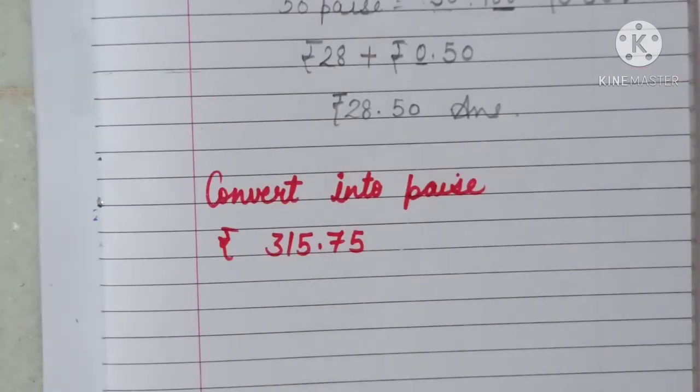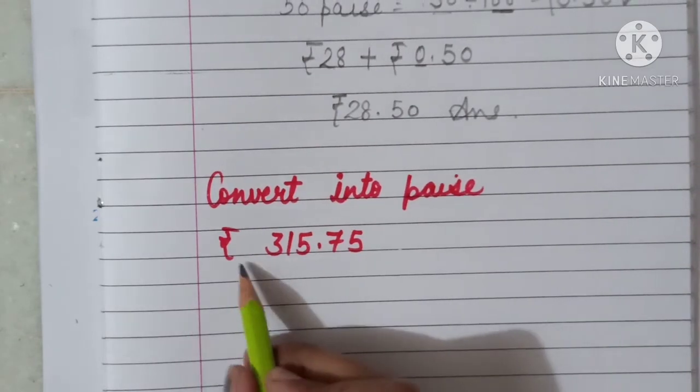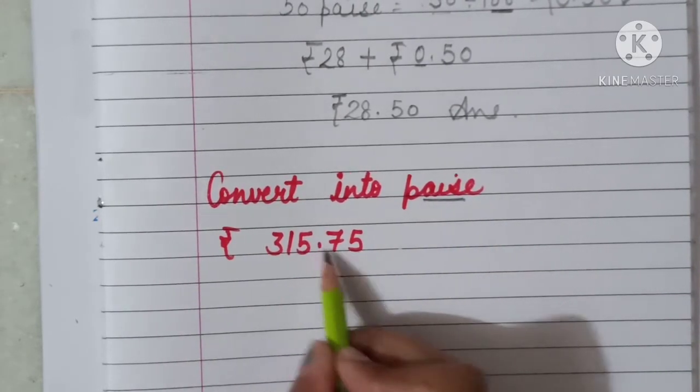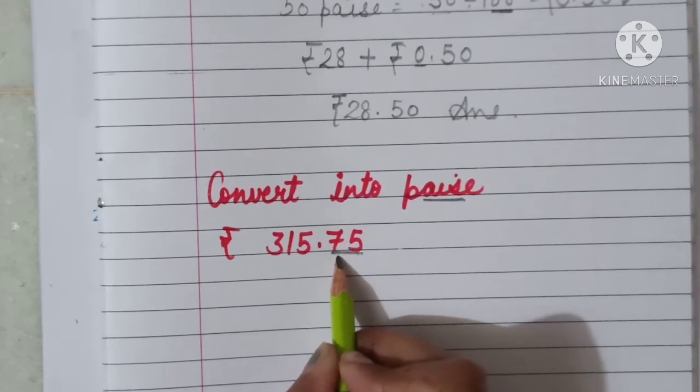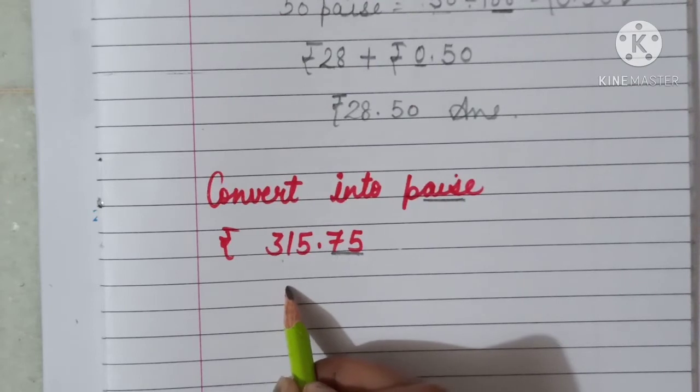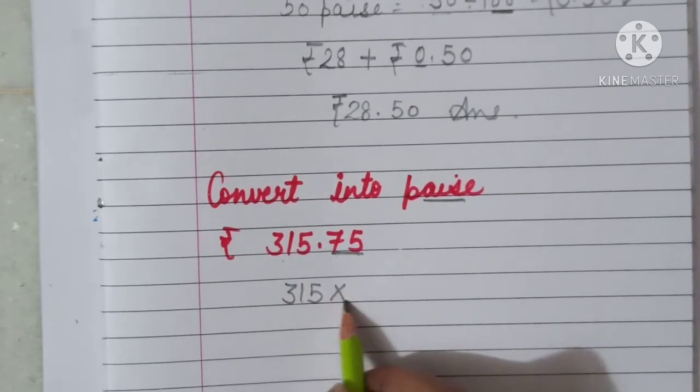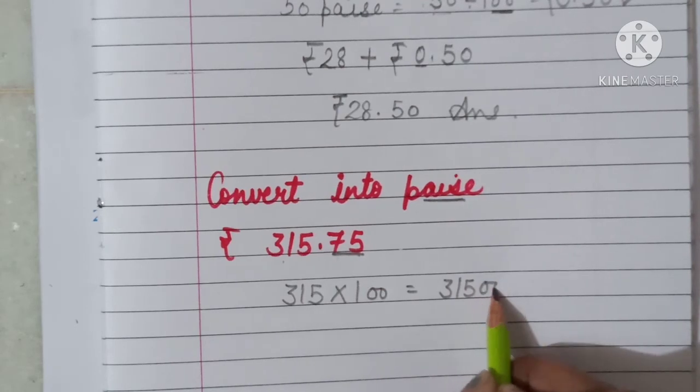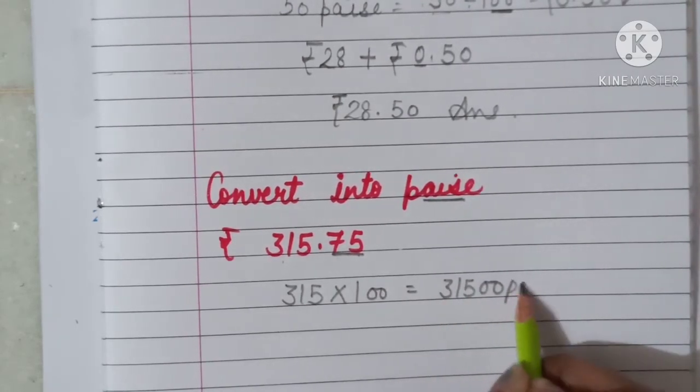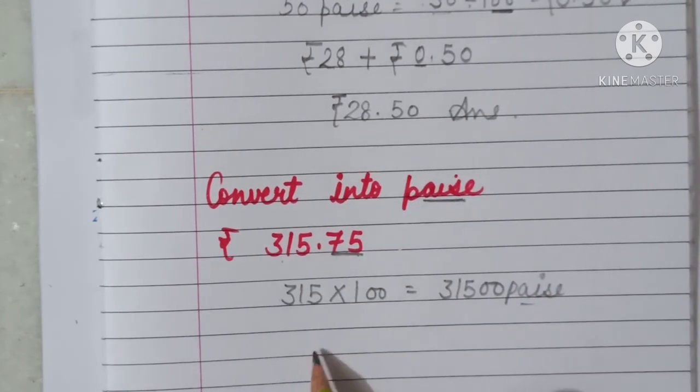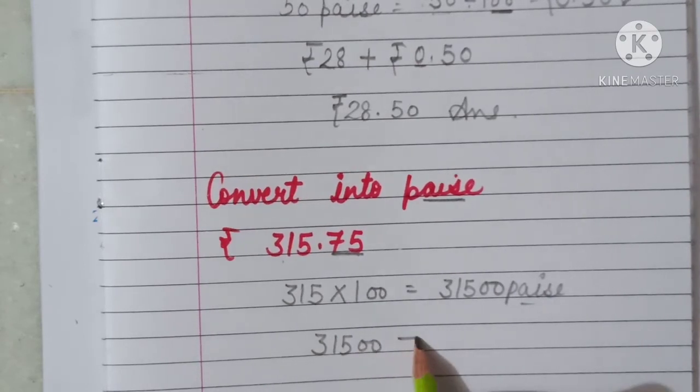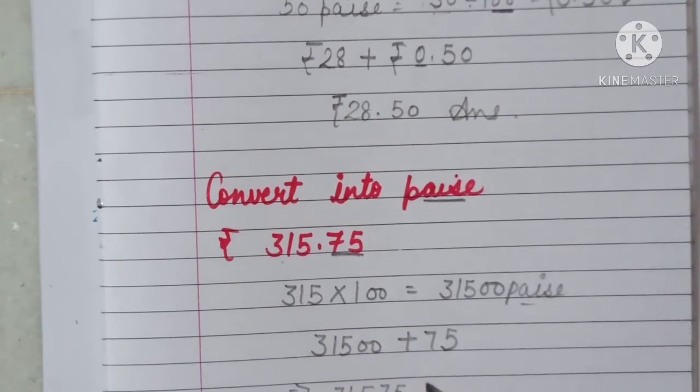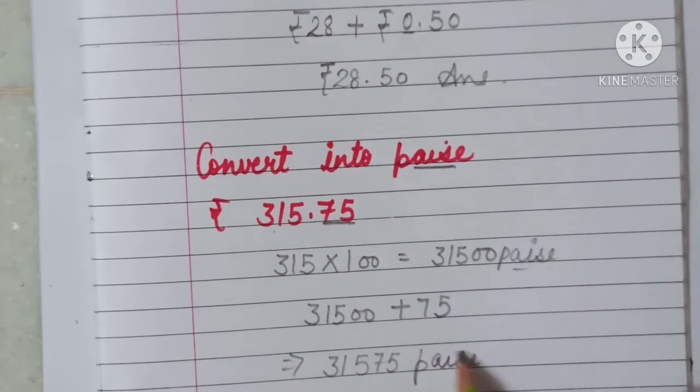Let's solve one question from the exercise. Convert into paise. Rupees 315.75. Aapko isko paise mein convert karna hai. Point ke after wale kya hote hain? Paise. This is already in paise. Aur this is rupees, 315. So rupees se paise convert karne ke liye aap kya karte hain? Multiply with 100. So 315 multiply with 100, kya aayega? 31,500 paise. And 75 is already paise. Now we will add both. So our answer will be 31,575 paise. Clear everyone?